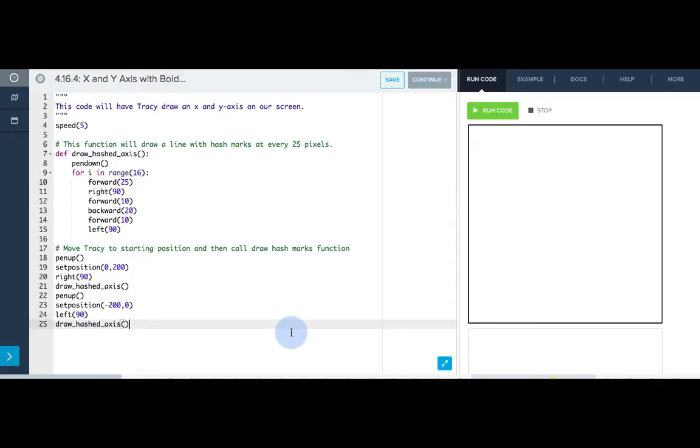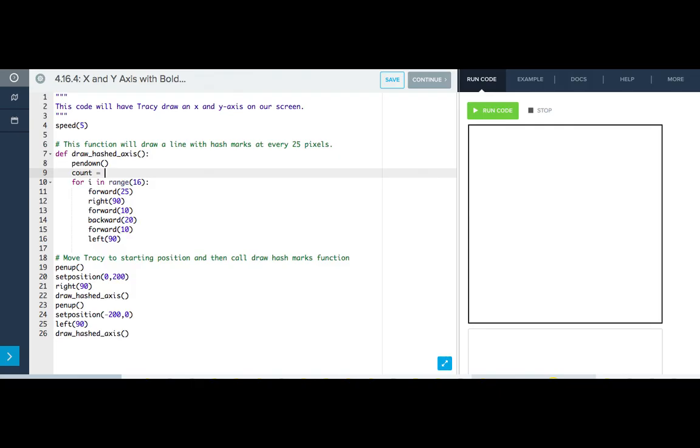Here we have the code we wrote that creates an x and y axis with hash marks. We need to add in a variable that will count which number hash mark we're drawing, so that we can use an if statement to check if our hash mark is even before bolding the line. I want to assign my variable in the function I'm going to use it in. So before I start my hash mark loop, I'm going to write count equals 0.